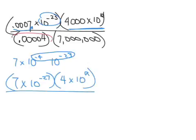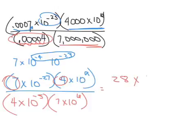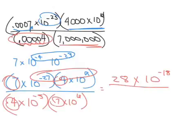Let's look at this one here. This is going to have to change to 4 times 10, and we moved it over 1, 2, 3, 4, 5 — 5 to the right, so it's negative. If we moved it to the left, it would be positive. So this is 7 times 10, and we moved the decimal 1, 2, 3, 4, 5, 6 places to the left, so it's positive. So now we take our top number, 7 times 4, and get 28. We add these two, over 4 times 7 is 28, and we add those two.